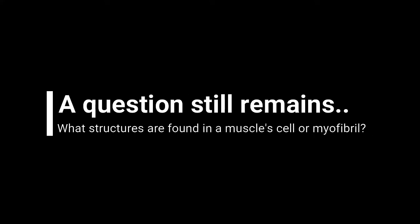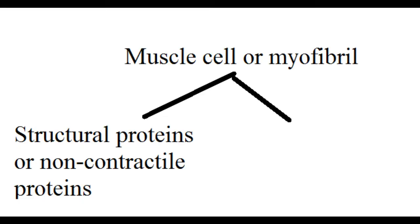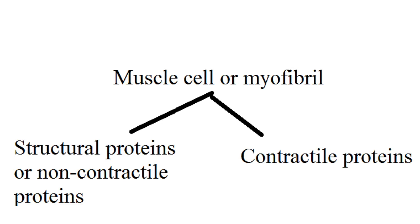One question remains: what is a muscle cell composed of, i.e., what structures are found in a muscle cell? Let's go into some more details about the structure of a muscle cell. For ease, let's divide a muscle cell into two sections: non-contractile units or structural proteins, and contractile units. Let's talk about the non-contractile section first.